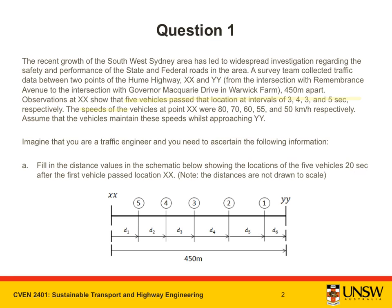The speeds of the vehicles at point XX were 80, 70, 60, 55 and 50 kilometers per hour respectively. Assume that the vehicles maintain these speeds whilst approaching YY.